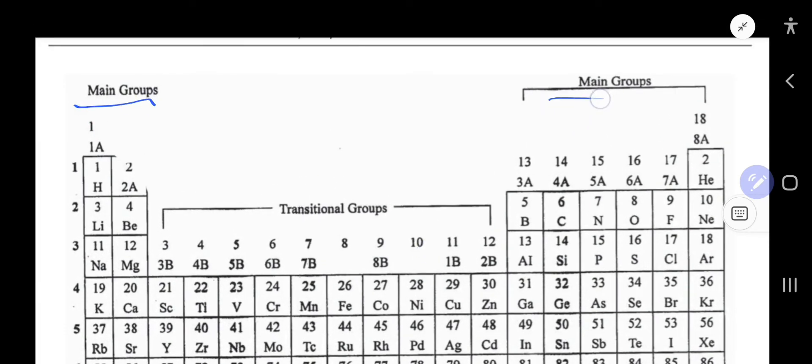For main group elements, valence electrons equal group numbers. Main group means group 1, 2 and group 13 to group 18. These are main group elements.